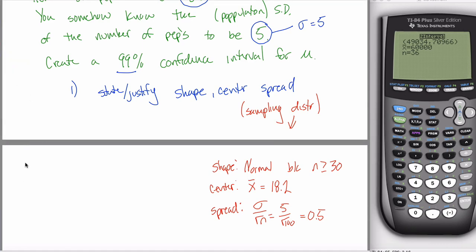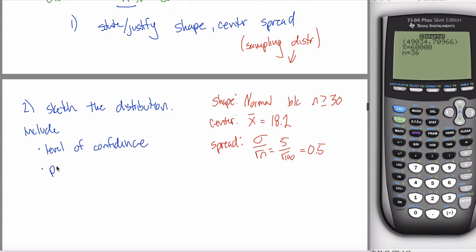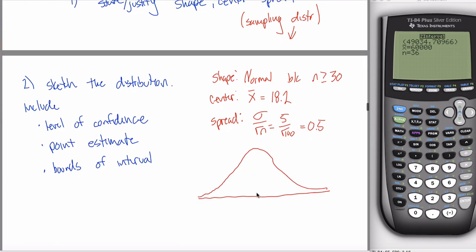The spread of this distribution is 0.5, this 5, divided by the square root of this 100. There's the first step. In every one of these, I'll ask you for step 1, and you'll give back this information. Step 2. We'll say sketch the distribution, or maybe sketch the sampling distribution. And if I'm really enumerating things, I'm going to tell you that there's three things I want in your picture. Include the level of confidence, the point estimate, and the bounds of your interval.